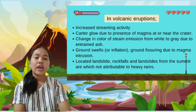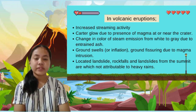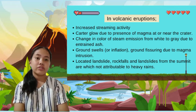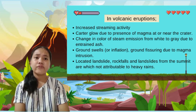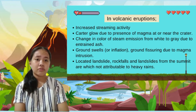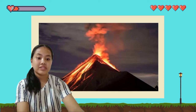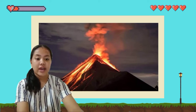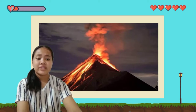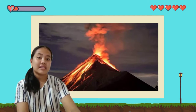In volcanic eruptions, signs include increased steaming activity, crater glow due to presence of magma at or near the crater, changing color of steam emission from white to gray due to entrained ash, ground swell or inflation, and ground fissuring due to magma intrusion. Localized landslides, rock falls, and landslides from the summit not attributable to heavy rains are also signs. A volcanic eruption is when lava and gas are released from a volcano, sometimes explosively.